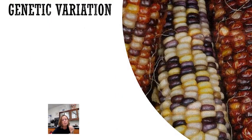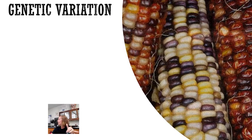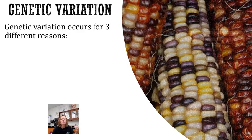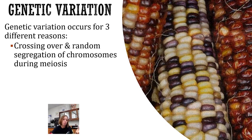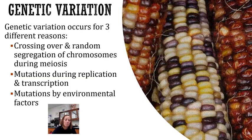Now getting deeper into this week's topic: genetic variation. We know that our genes code for proteins, and our proteins give us our looks and help our body run. Genetic variation occurs for three different reasons. The first is crossing over and random segregation of chromosomes during meiosis — we've already covered this. The second is mutations that occur during replication and transcription. The third is mutations that occur because of environmental factors.